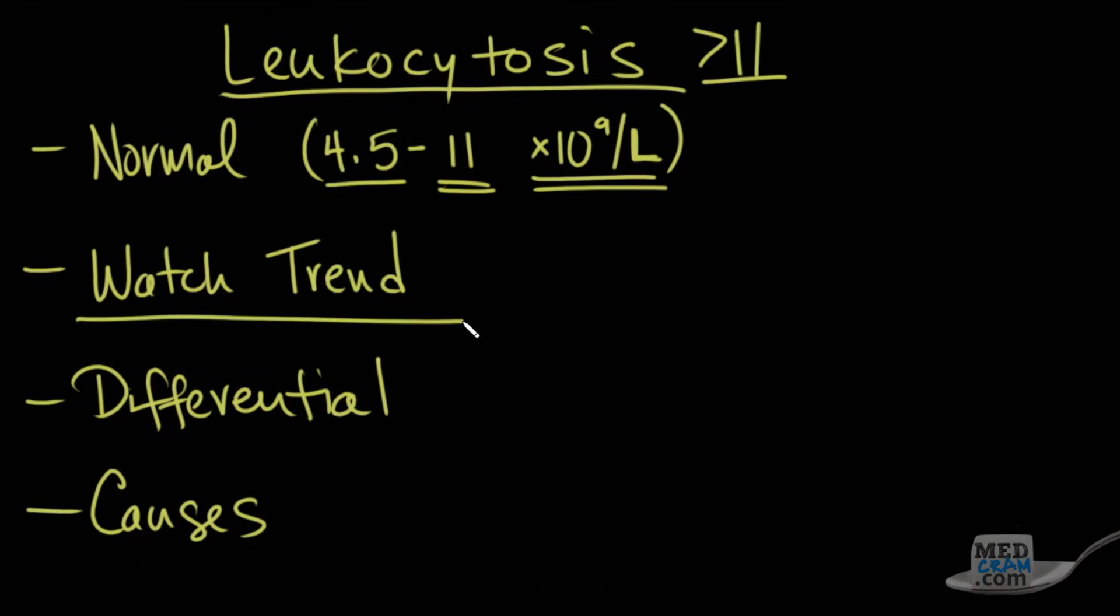You want to watch trends as we talked about in the first video. A 13 on a white blood cell count may be elevated, but if the previous one was 20 and it's coming down to 13, then that's a process that's actually resolving. If, on the other hand, you've got a 5 and it's going to 13, that's something we need to worry about more. So again, as always, watch the trends.